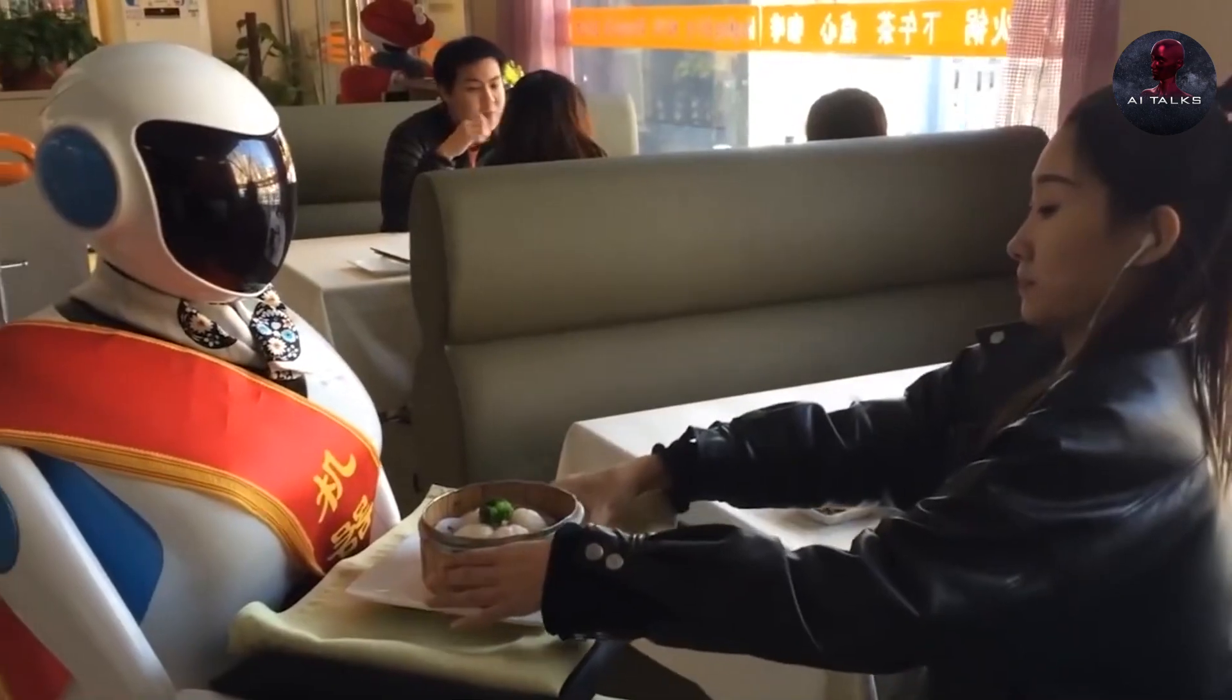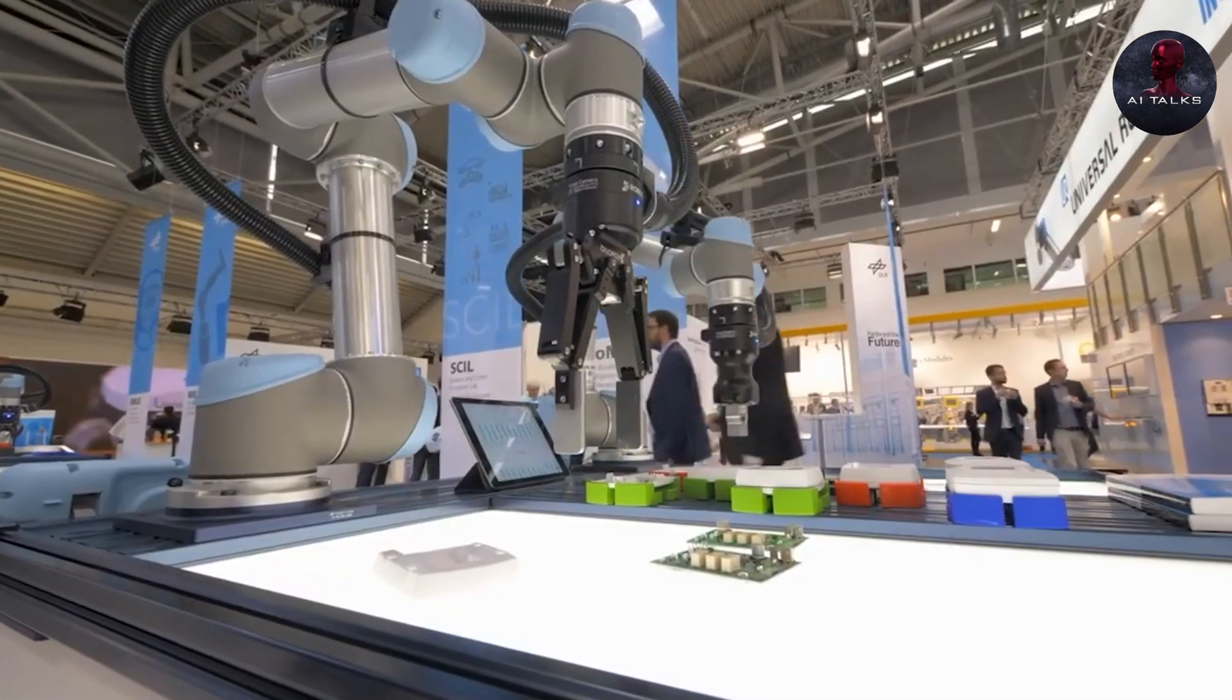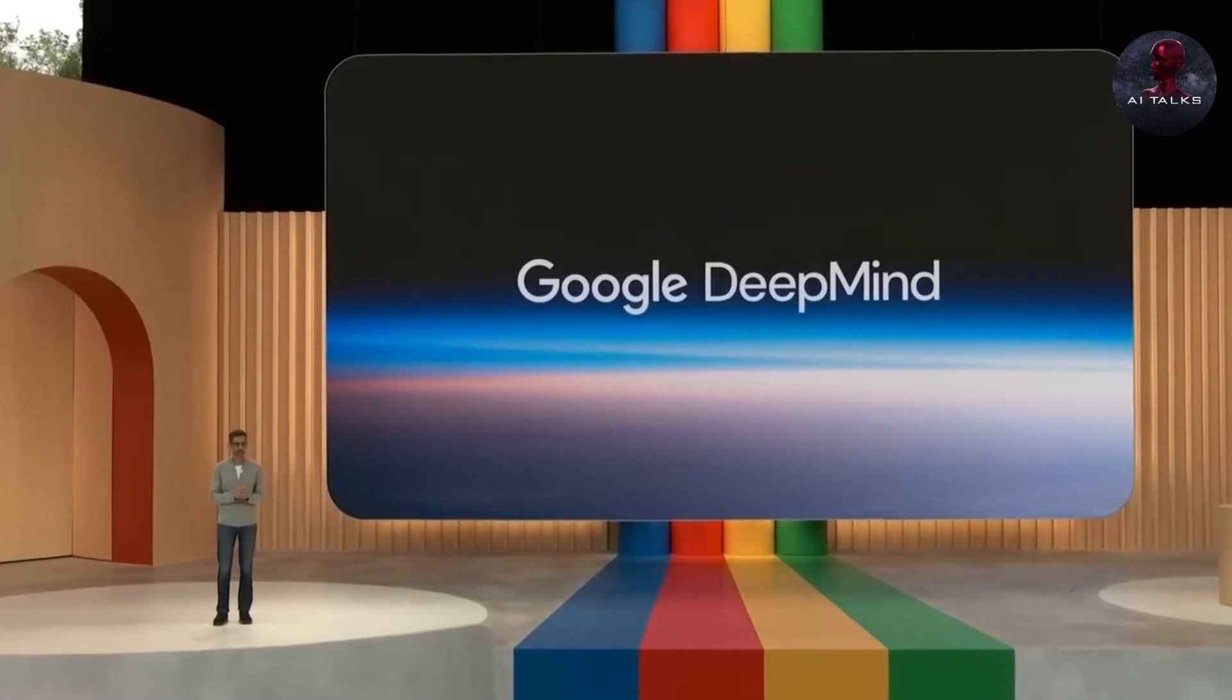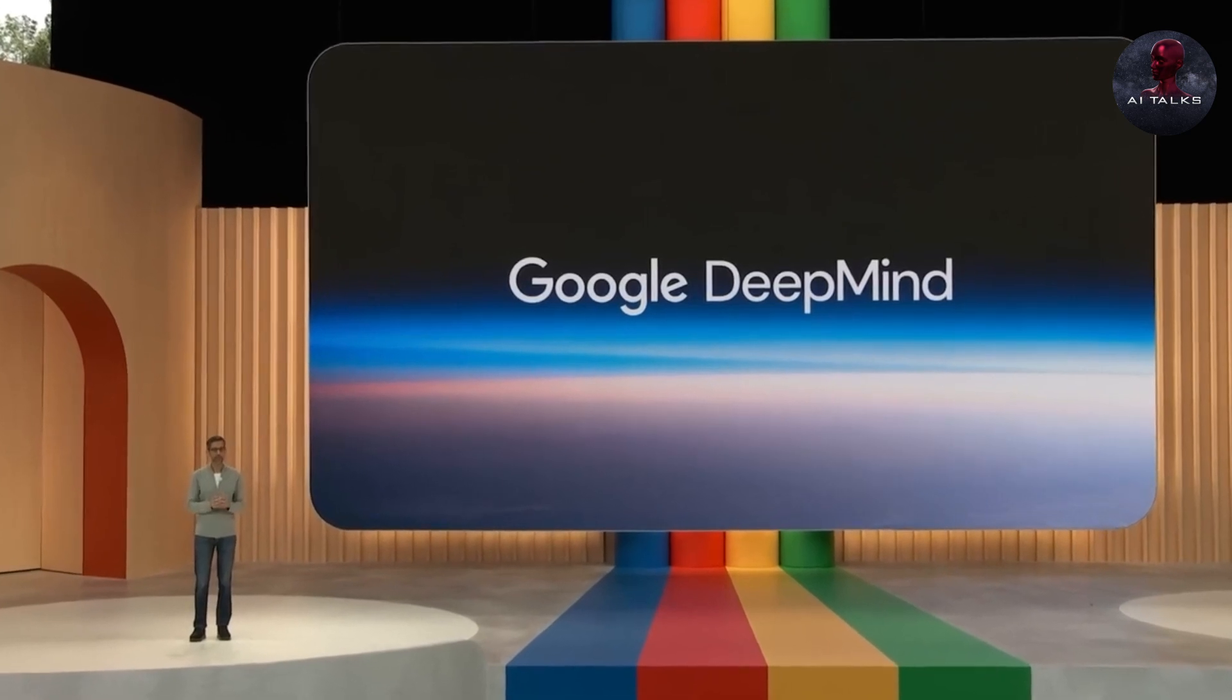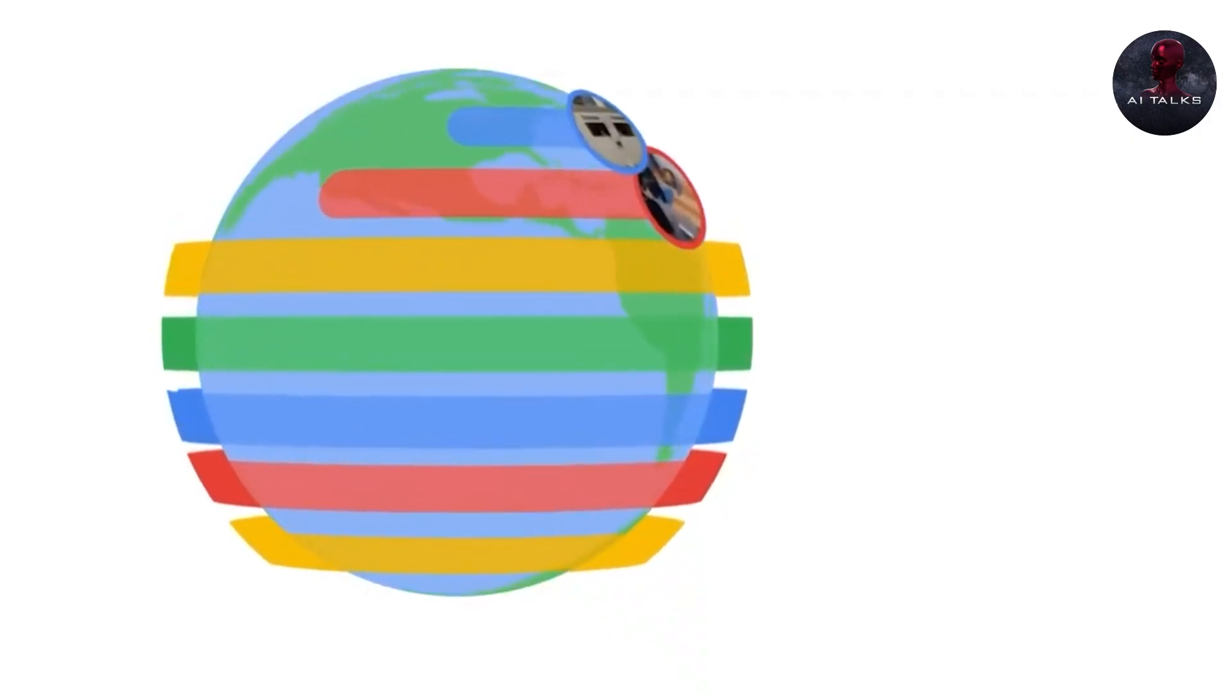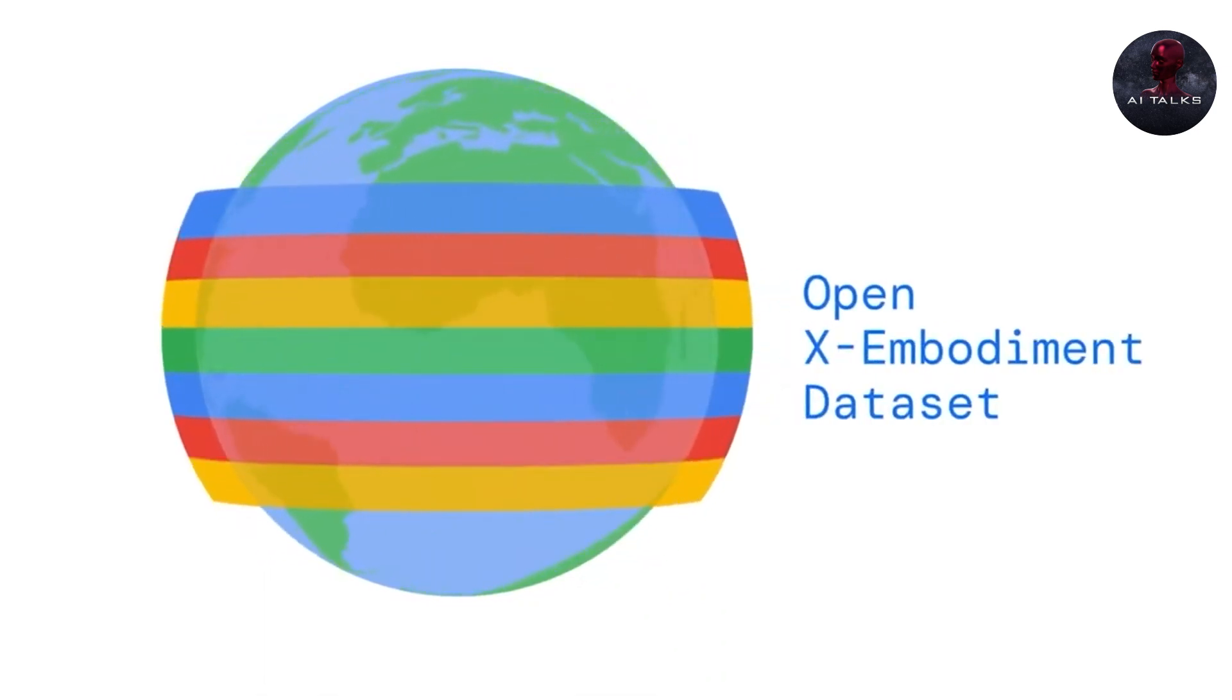Robotics has reached incredible heights, with robots assembling cars, exploring Mars and even performing surgery. But most robots are only as smart as their programming. They excel at repetitive tasks in controlled environments, throw in something new and they short-circuit.